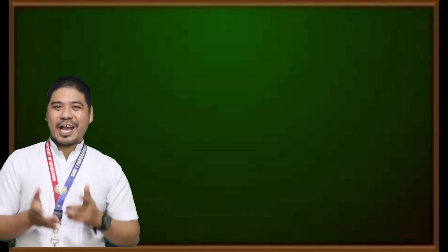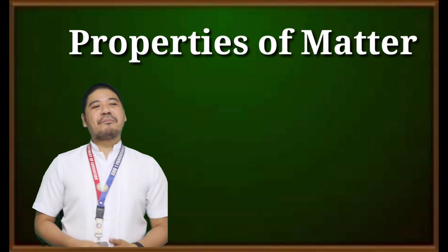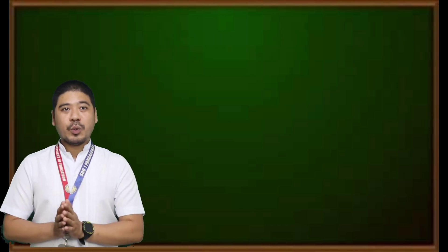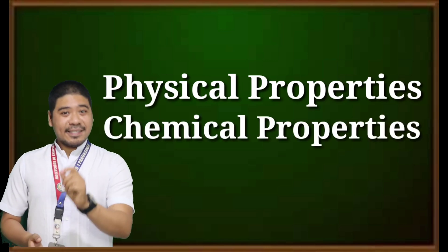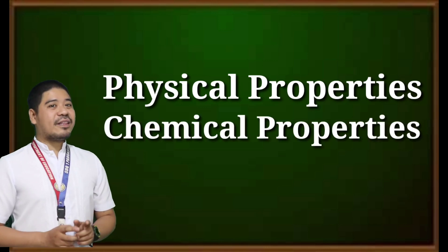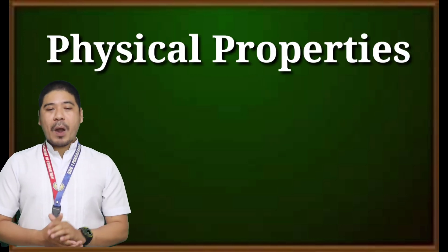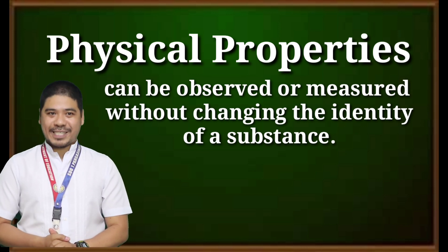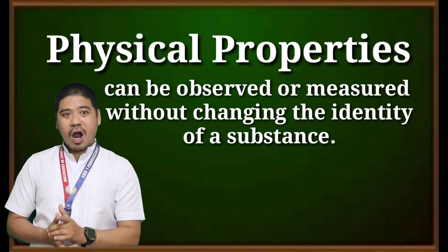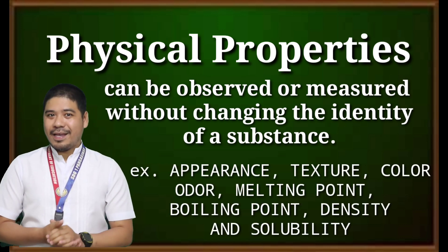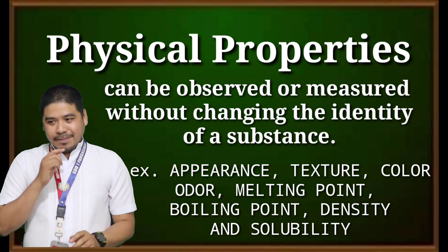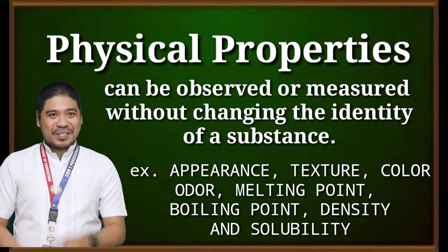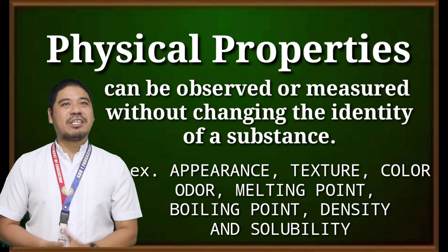This time, we will study the different properties of matter. Properties of matter are categorized into two: the physical property and the chemical property. Physical properties can be observed or measured without changing the identity of the substance. Examples of physical properties are appearance, texture, color, odor, melting point, boiling point, density, and even solubility.